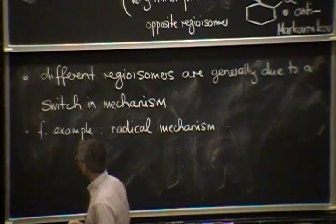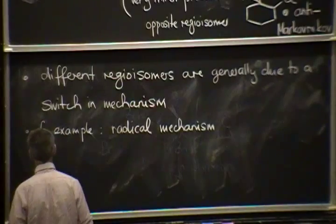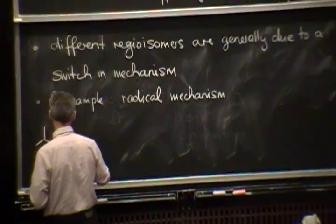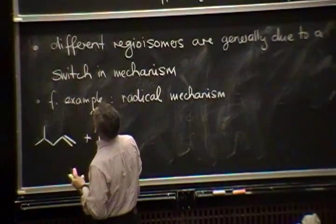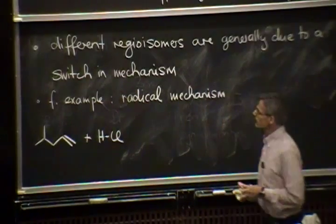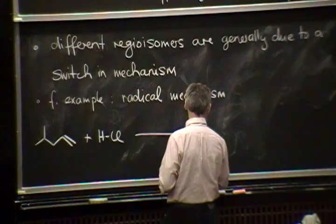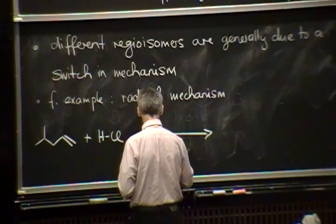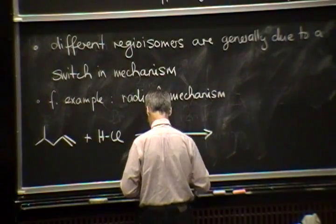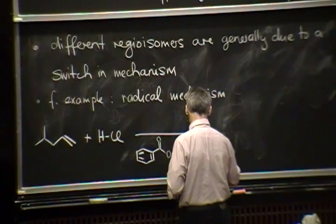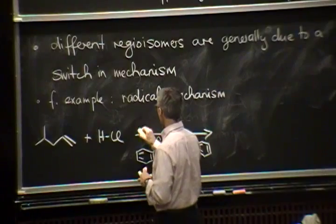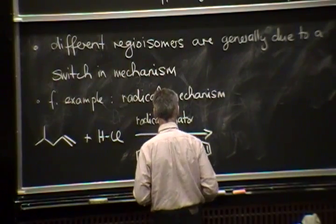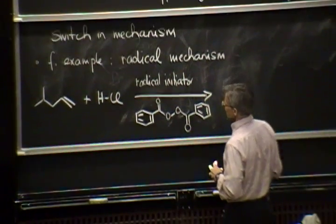And so, let me just write the equation for the radical mechanism, and then the actual mechanism I'll discuss on Thursday. So, you can do an addition of HBr onto an alkene. Let's, again, use our alkene here. We can do HCl. As an example, and now, if I mix in a radical initiator, and I'm using here dibenzoyl peroxide, which is a pretty potent radical initiator. So, this is a radical initiator, and this is known as dibenzoyl peroxide.